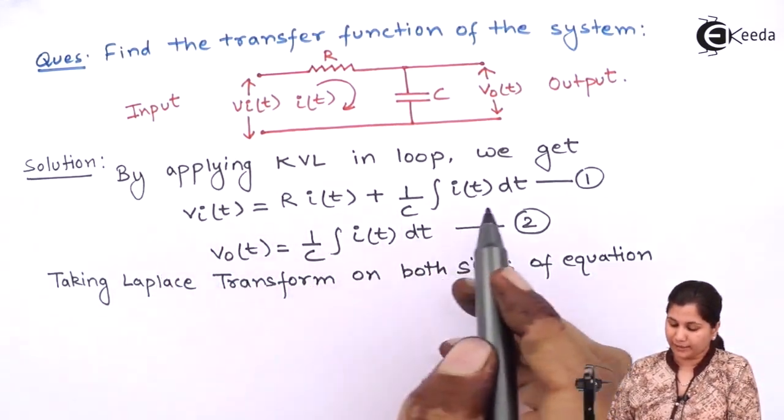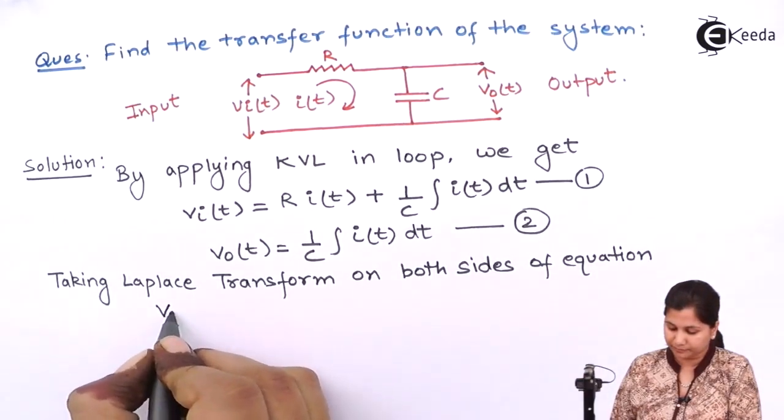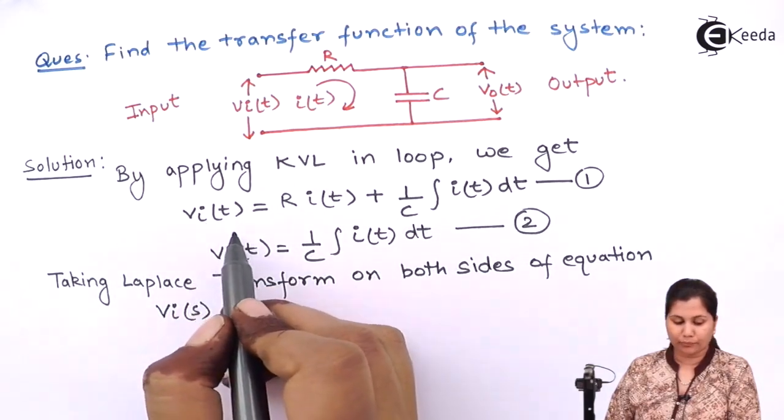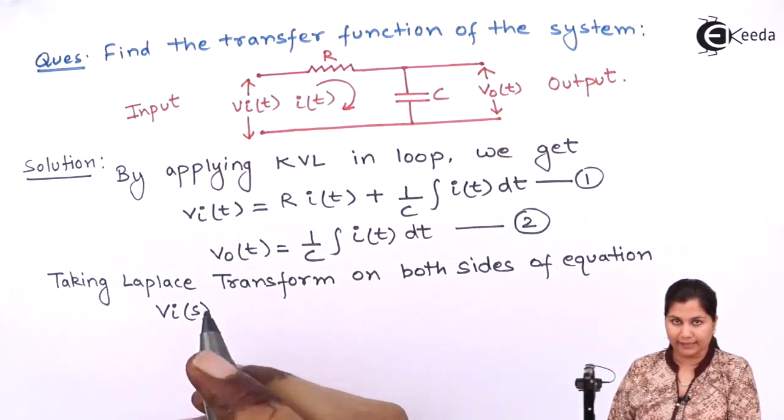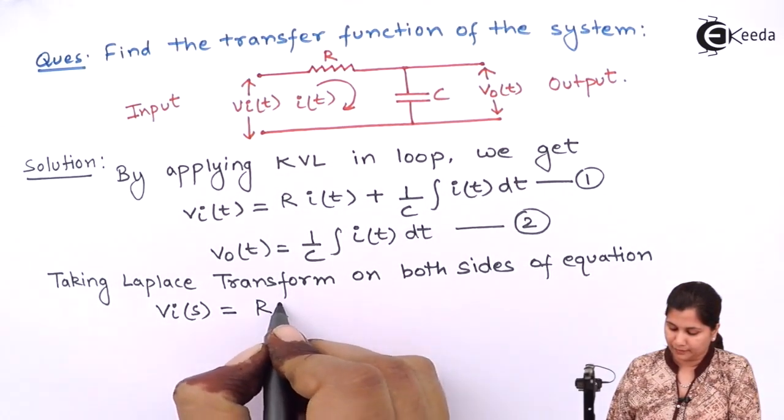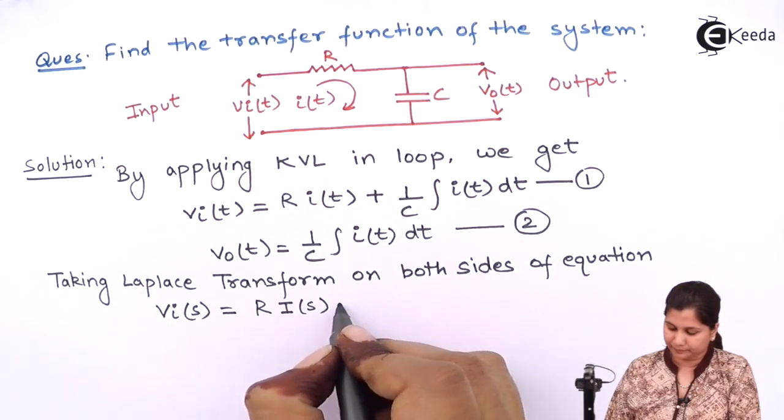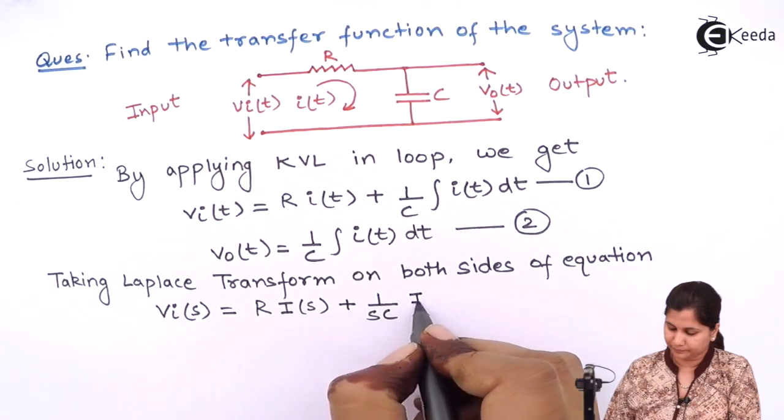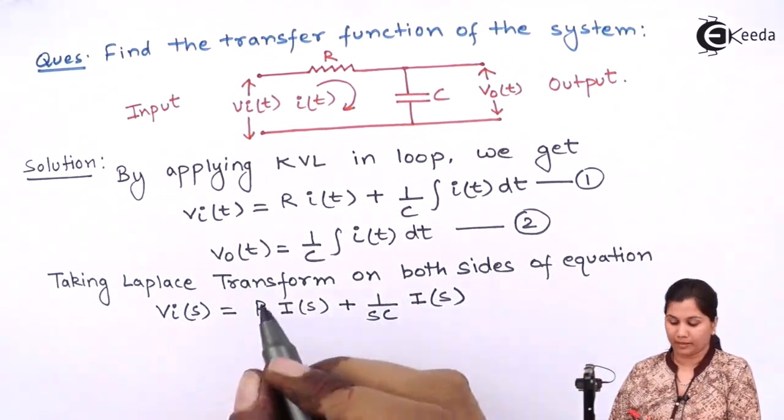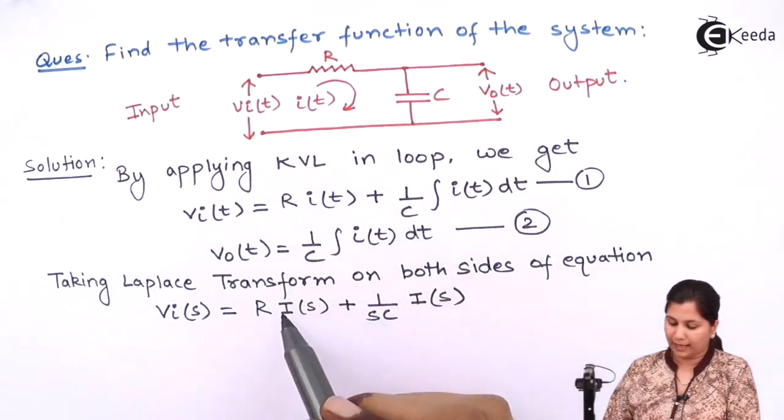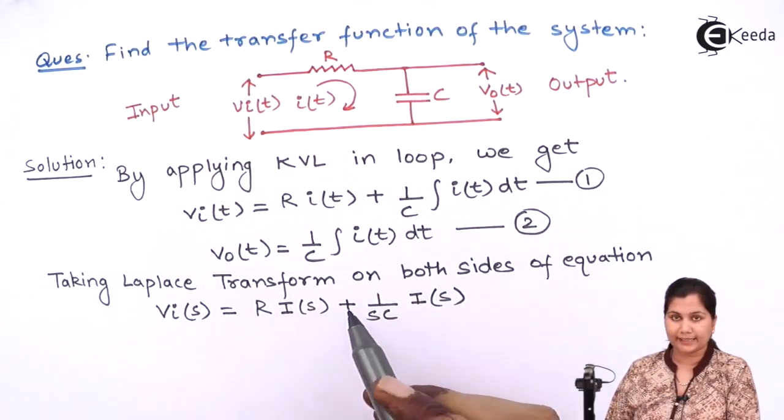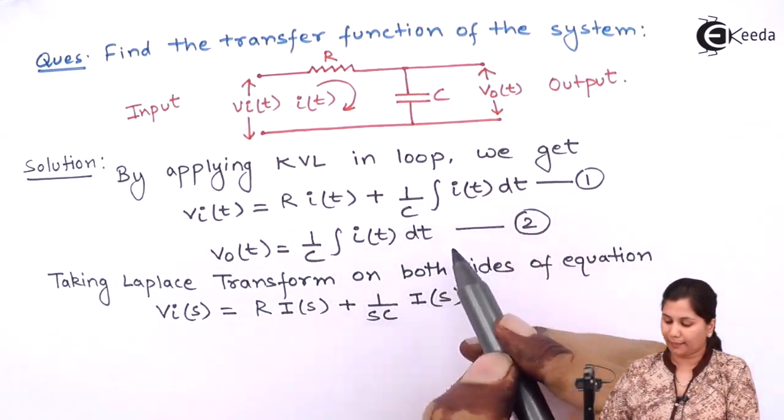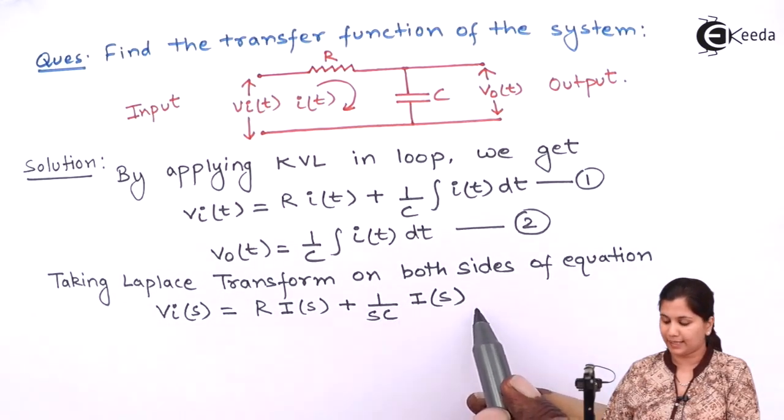We will get, first apply it on the first equation. The Laplace transform of VIT will be VIS. Laplace transform of RIT will be RIS plus 1 upon C integration IT DT, its Laplace transform will be 1 upon S IS.